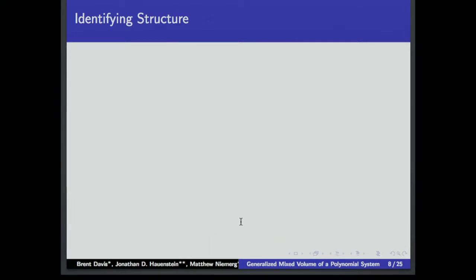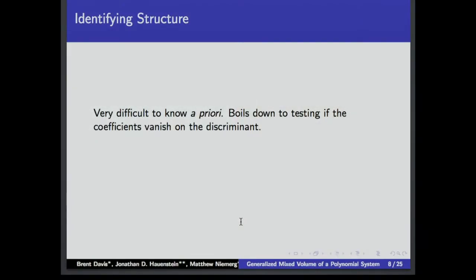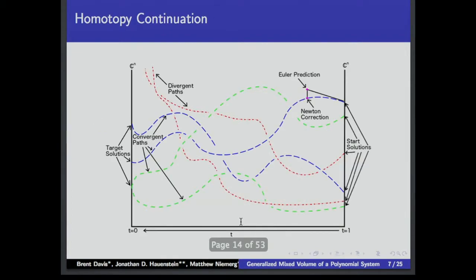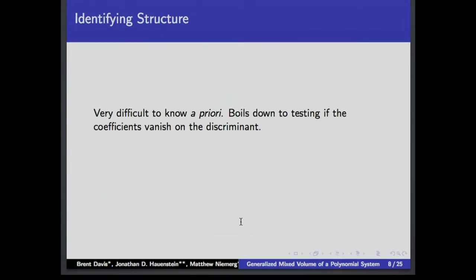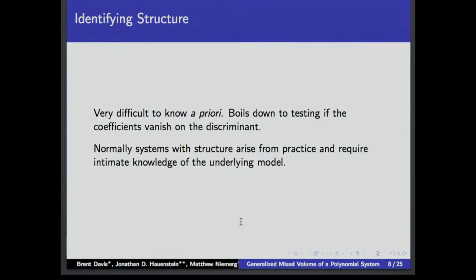When we want to identify structure, it's very difficult to know ahead of time. It really boils down to some additional algebraic relationship on our coefficients — essentially our coefficients vanish on our discriminant. It's really difficult to compute the actual discriminant variety. For that little bivariate system, I stopped the computation after two hours. A lot of times these systems from industry are given to us with this identifiable structure already intact.